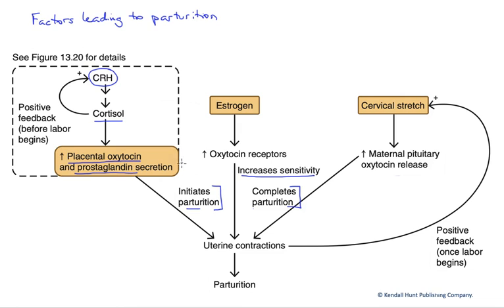What increases the sensitivity to these factors? That would be estrogen. Estrogen from the placenta is rising late in pregnancy while progesterone is falling. Progesterone is anti-parturition — it has to dominate through the majority of pregnancy because it opposes the contractions of the uterus. Estrogen is the opposite, and in fact cortisol is actually going to help enhance the conversion of progesterone to estrogen, allowing estrogen to become the dominant hormone.